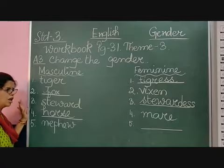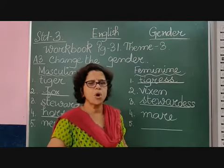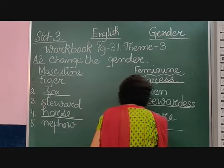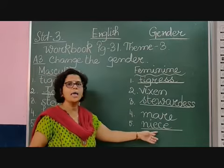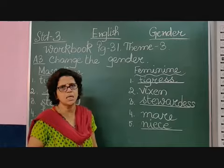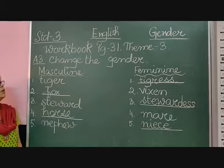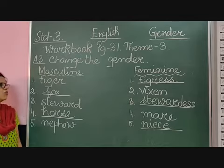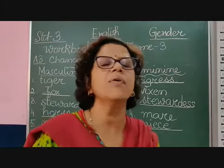And the last one is nephew and niece. You remember — your brother or sister's son is called nephew, and your brother or sister's daughter is called niece. Be careful of the spelling of niece, children. Don't say 'nice' — it is niece: N-I-E-C-E. So this is your 'change the gender' exercise from your book, theme 3, worksheet number 1, on page number 31: tiger/tigress, fox/vixen, stewardess, horse/mare, and nephew/niece. Please do this in your workbook itself. Thank you.